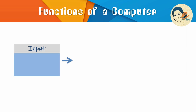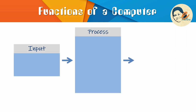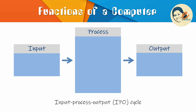Now let's discuss the functions of a computer. A computer takes data as input, then processes it and produces output — so a computer follows the input-process-output cycle, or IPO cycle. A computer has four basic functions. First, input: input is the raw information entered into the computer from input devices. The most common input devices are the keyboard and mouse.